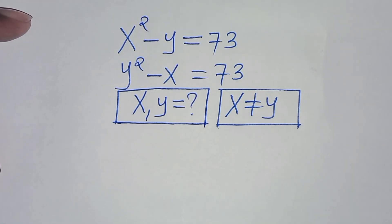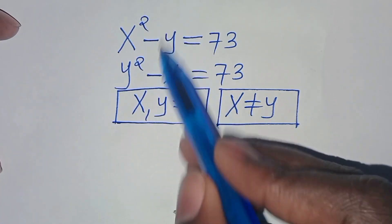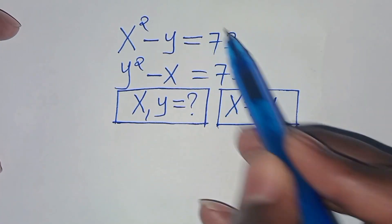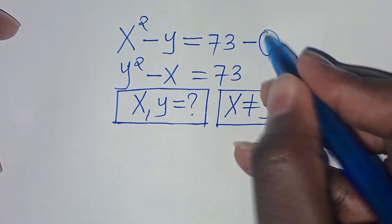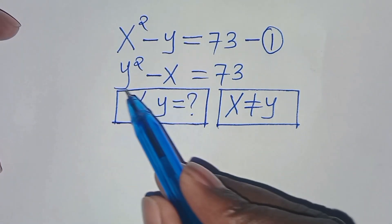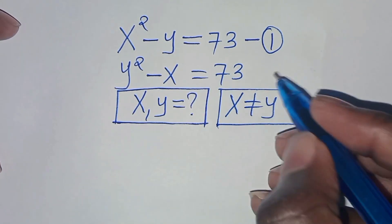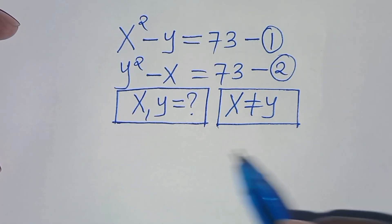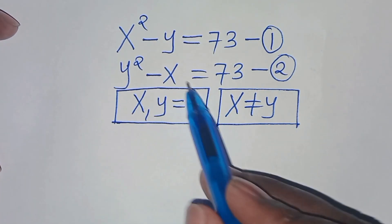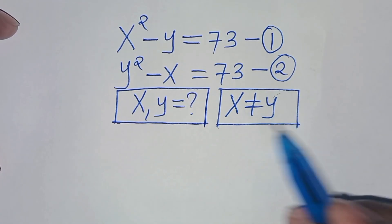Hello everyone, you are welcome to solve this nice algebra problem, which is x squared minus y, this is equal to 73. Let's call this equation 1, and y squared minus x, this is equal to 73. Let's call this equation 2. So what is the value of x and what is the value of y, given that x is not equal to y?